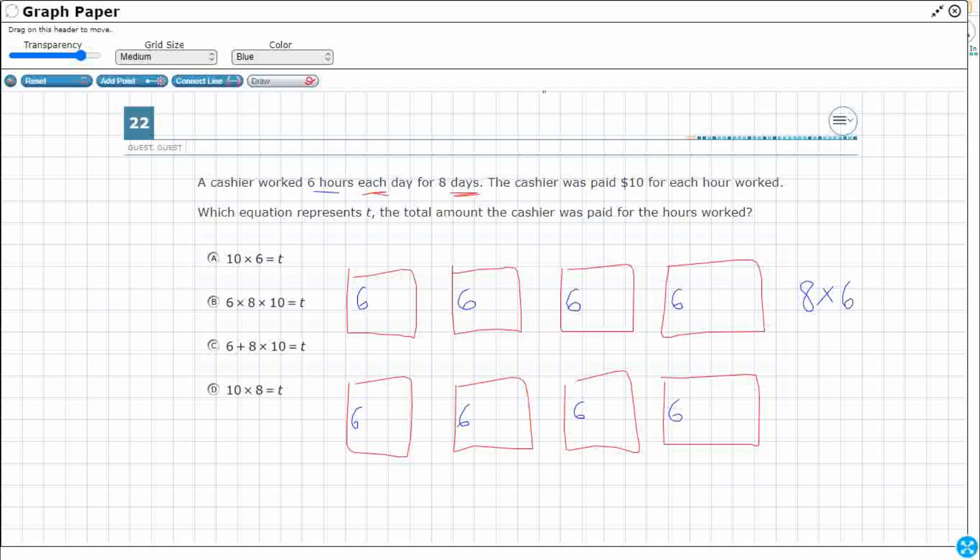Now, the cashier was paid 10 bucks for each hour. Okay, so I've got another each and these eaches? These eaches are really strong indicator that most likely it's going to be multiplication. Okay, because we're talking about equal groups. Equal groups each that lets us know multiplication or division.